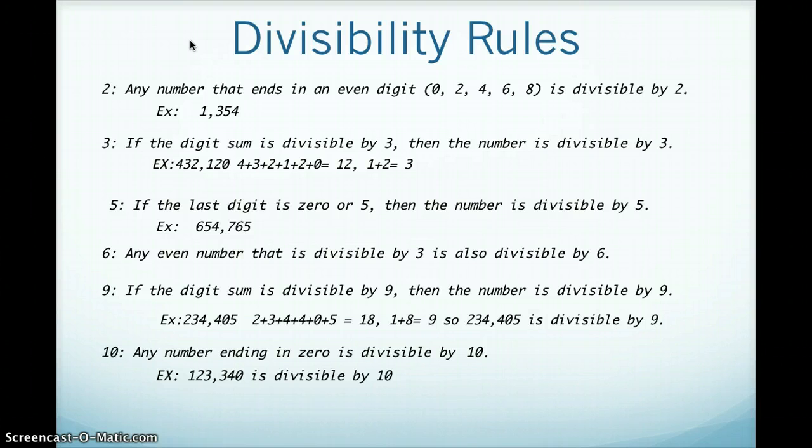So 5, if the last digit is a 0 or a 5, then the number is divisible by 5, such as 654,765, ends in a 5, so it's divisible by 5.